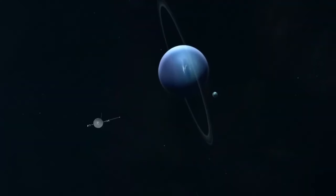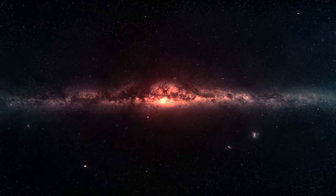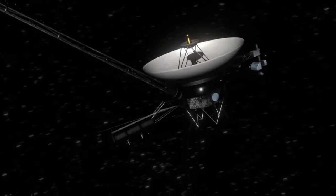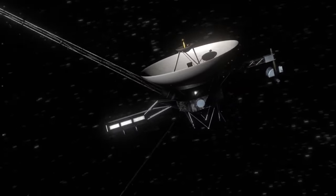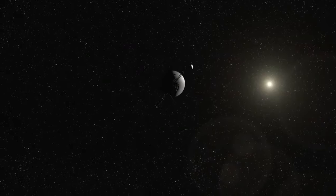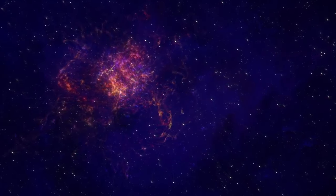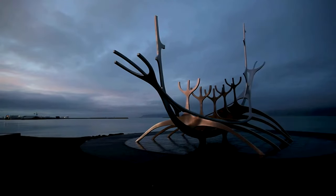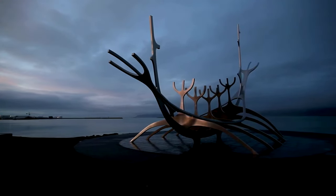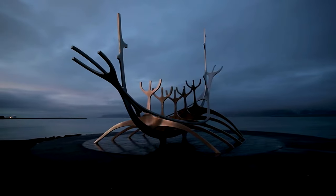Voyager 1's mission took advantage of a rare planetary alignment, allowing it to use gravitational slingshots to travel farther with less fuel. Even after completing its primary mission, the spacecraft has continued to send valuable data back to Earth, including the famous pale blue dot photo showing Earth from 3.7 billion miles away. In August 2012, Voyager 1 made history by becoming the first human-made object to enter interstellar space, a monumental milestone that expanded our understanding of the universe. This brave little spacecraft, launched in 1977, ventured beyond the influence of our sun's solar wind and crossed into the vast, uncharted territory that lies between the stars.